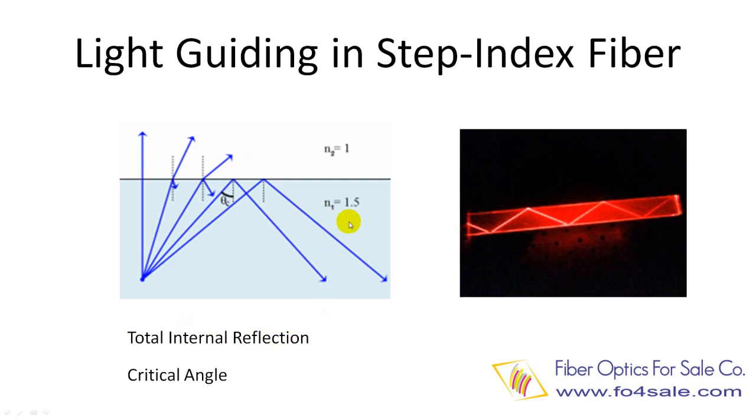Step index fibers use total internal reflection to confine the light within the core, so they will not escape from the core. The light ray experiences multiple total internal reflections and is guided along the fiber, as shown in the right side figure.